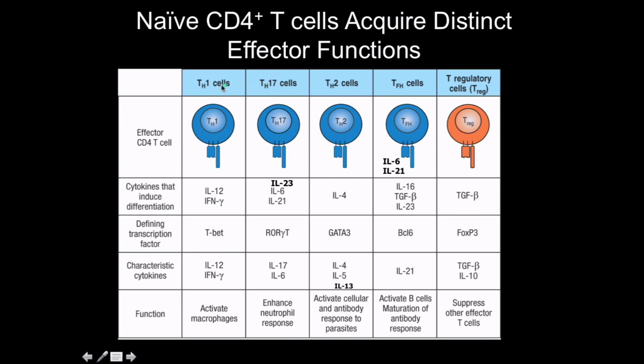For the helper T-cells, there are lots of subclasses that function based on the various infections or type of need we have at the time. What determines the differentiation of these is cytokines — specifically cytokines that come from the innate immune system. That's where we get the cytokines that are going to induce their differentiation.